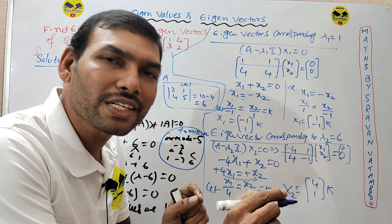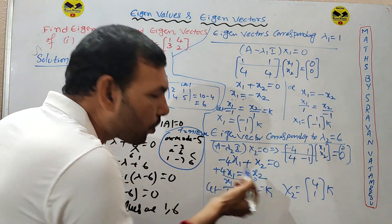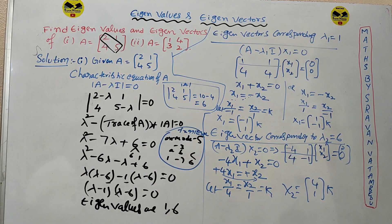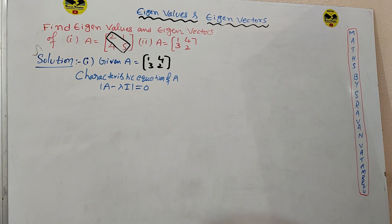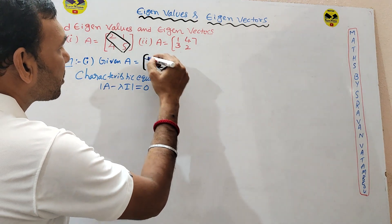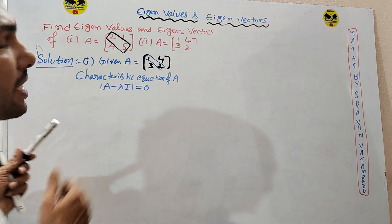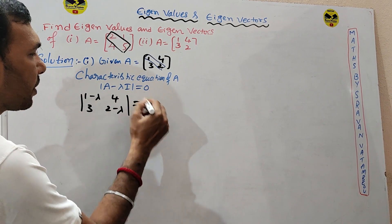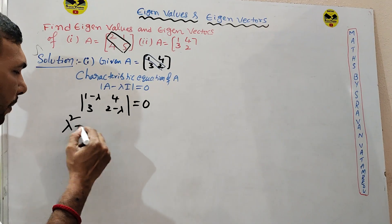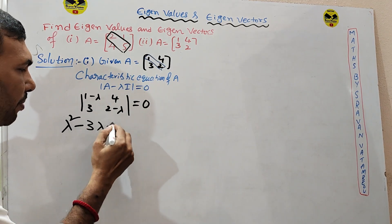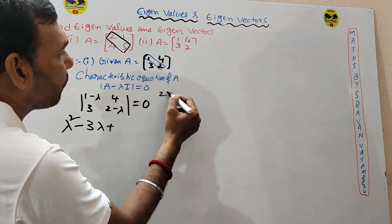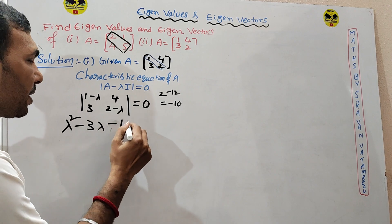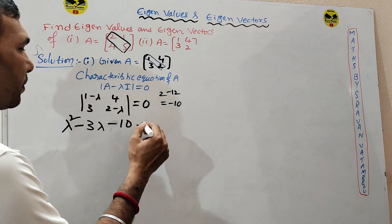For the second problem, consider matrix [1, −3; 4, 2] with principal diagonal marked. Det(A minus lambda·I): lambda squared minus sum of diagonal elements (1 plus 2 = 3)·lambda plus det(A). Det(A) = 1×2 minus (−3)×4 = 2 minus (−12) = 2 plus 12... giving the characteristic equation lambda squared minus 3·lambda minus 10 equals 0.